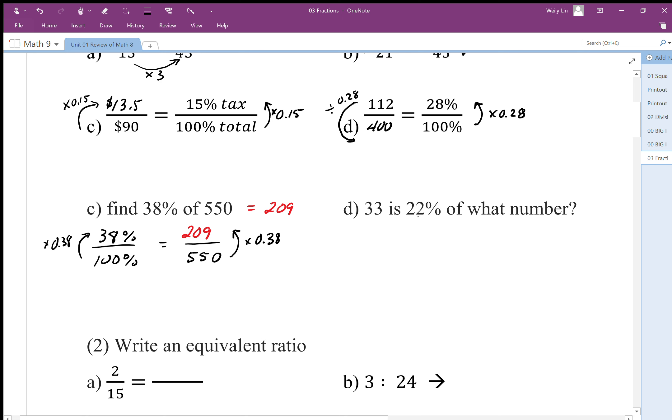Here we have 33 is 22% of what number. I'm going to do 22% compared to 100%. In this case, the 33 goes with the 22%, so the unknown part is going to be the whole. Our decimal multiplier is 0.22, and I'm going to use that in the opposite direction. This is why this proportional equation is nice - we can see very clearly that we're going in the opposite direction. So instead of multiplying by 0.22, I'm going to divide by 0.22. 33 divided by 0.22 gives me 150. So 33 is 22% of 150.